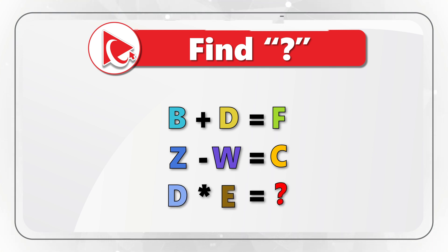For example, the expression B plus D equals F becomes 2 plus 4 equals 6 — which makes mathematical sense. The second expression, Z minus W equals C, becomes 26 minus 23 equals 3. The third expression, D multiplied by E, becomes 4 multiplied by 5 equals 20, which is associated with the letter T. So the correct answer is choice A: T.